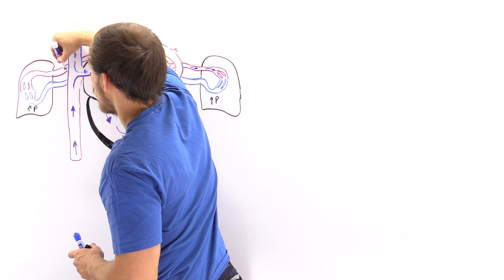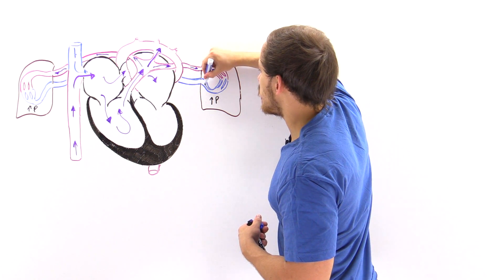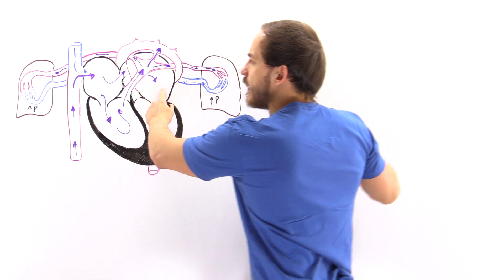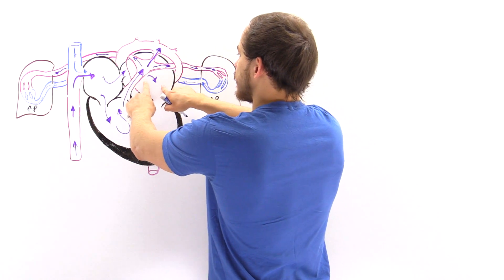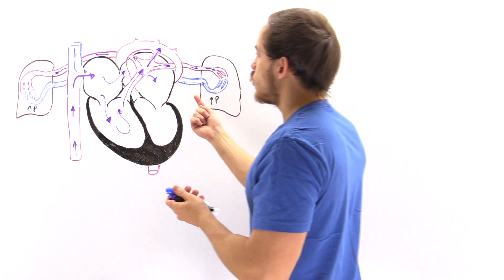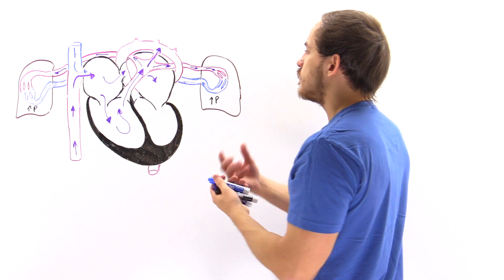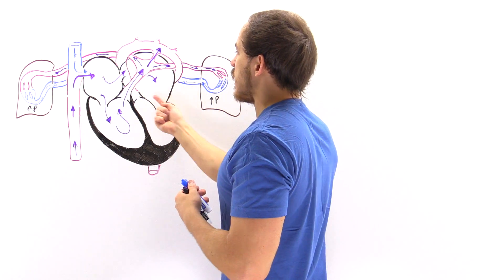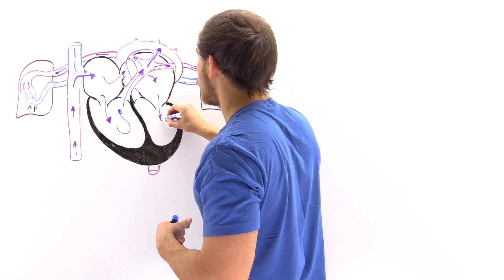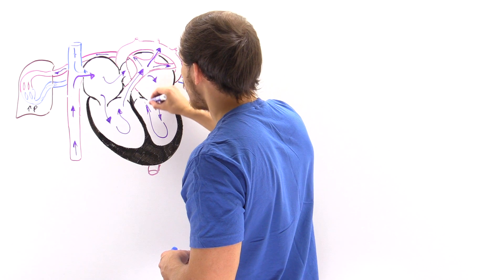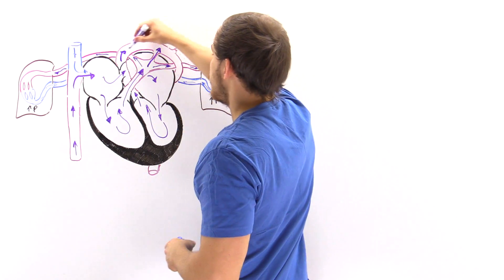Once the oxygen is deposited into the lungs, the deoxygenated blood returns via the pulmonary veins into the left atrium of the heart. So we see a mixing of the partially oxygenated blood coming in from the right atrium via the foramen ovale and the deoxygenated blood coming from the lungs, all mixing within the left atrium. That blood then moves into the left ventricle, which contracts and forces the blood into the systemic circulatory system — specifically into the aorta.